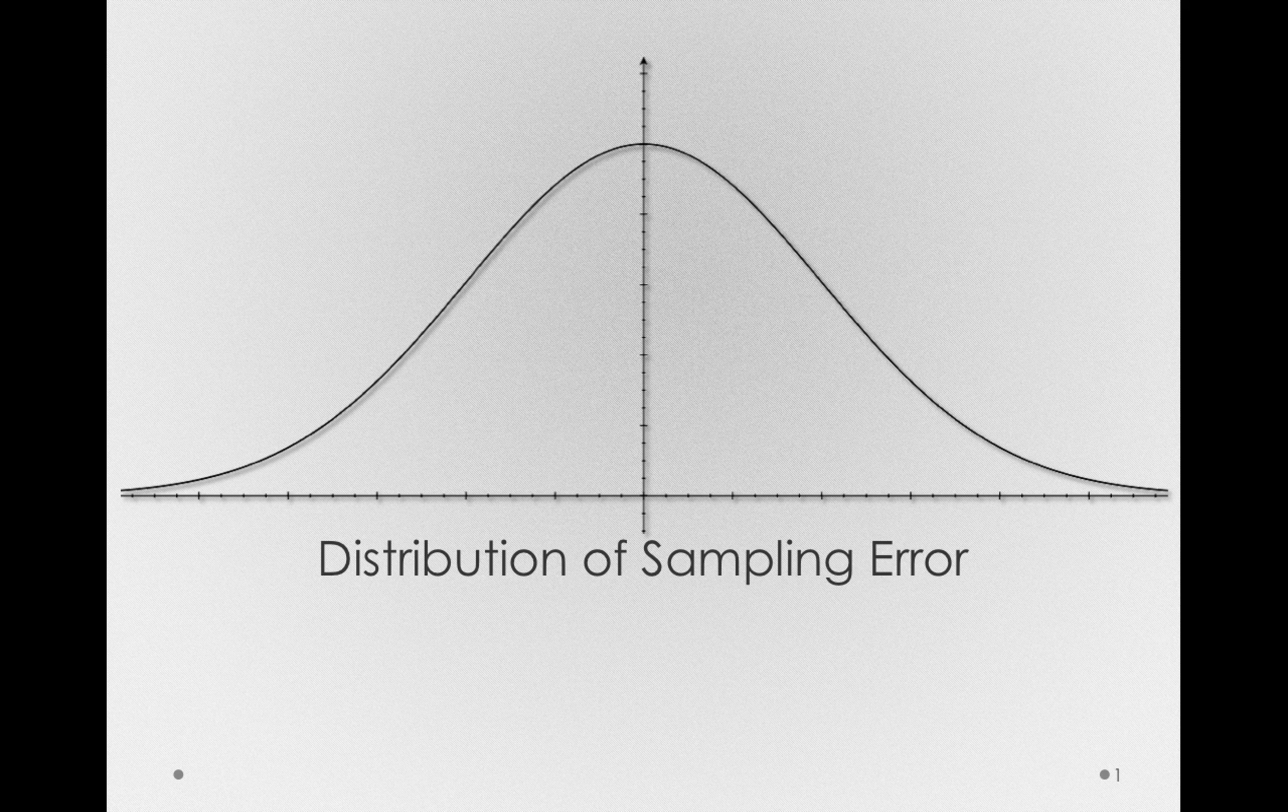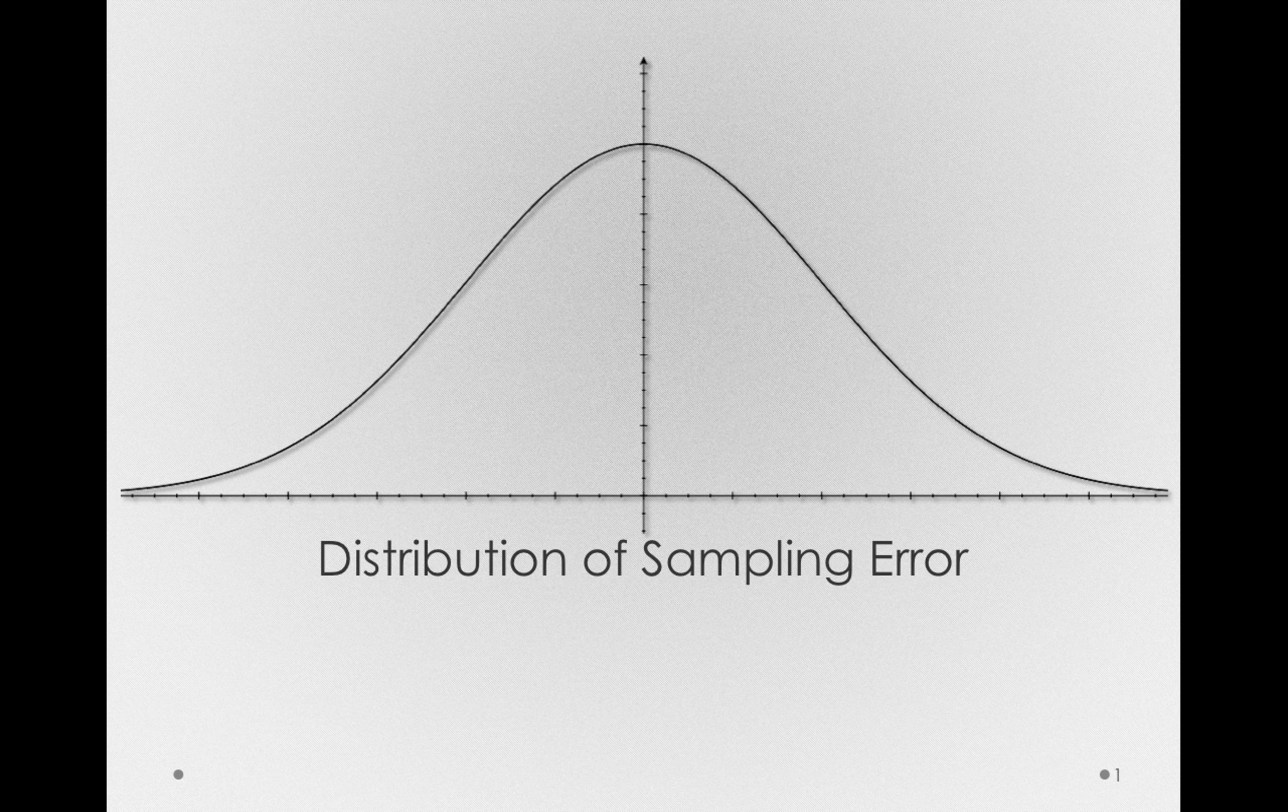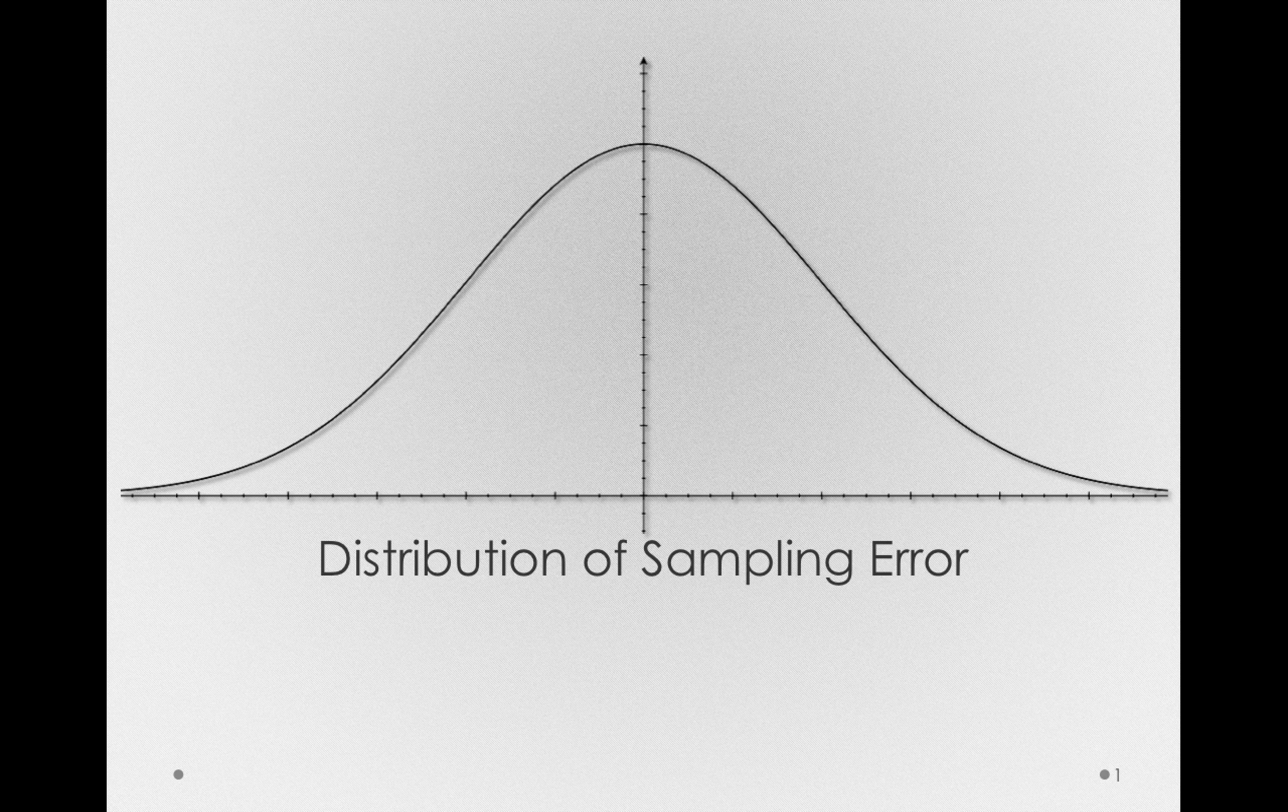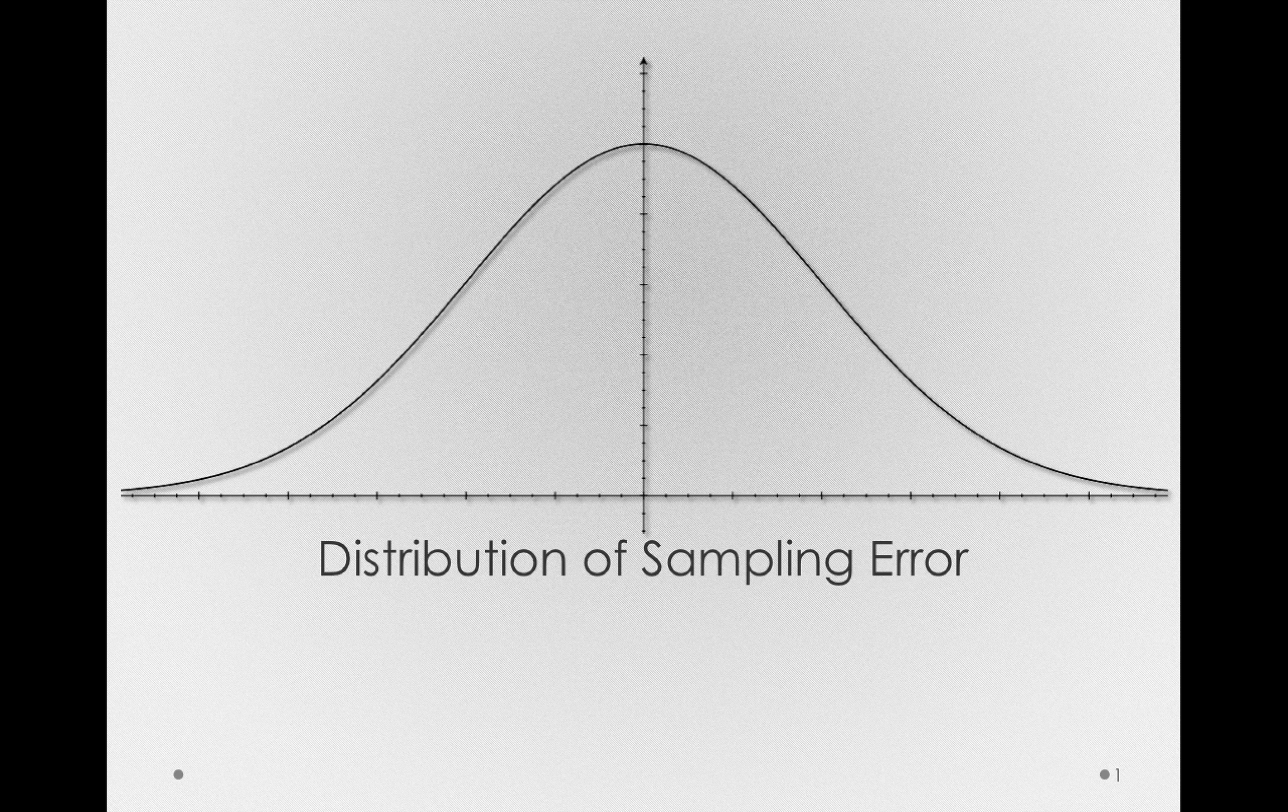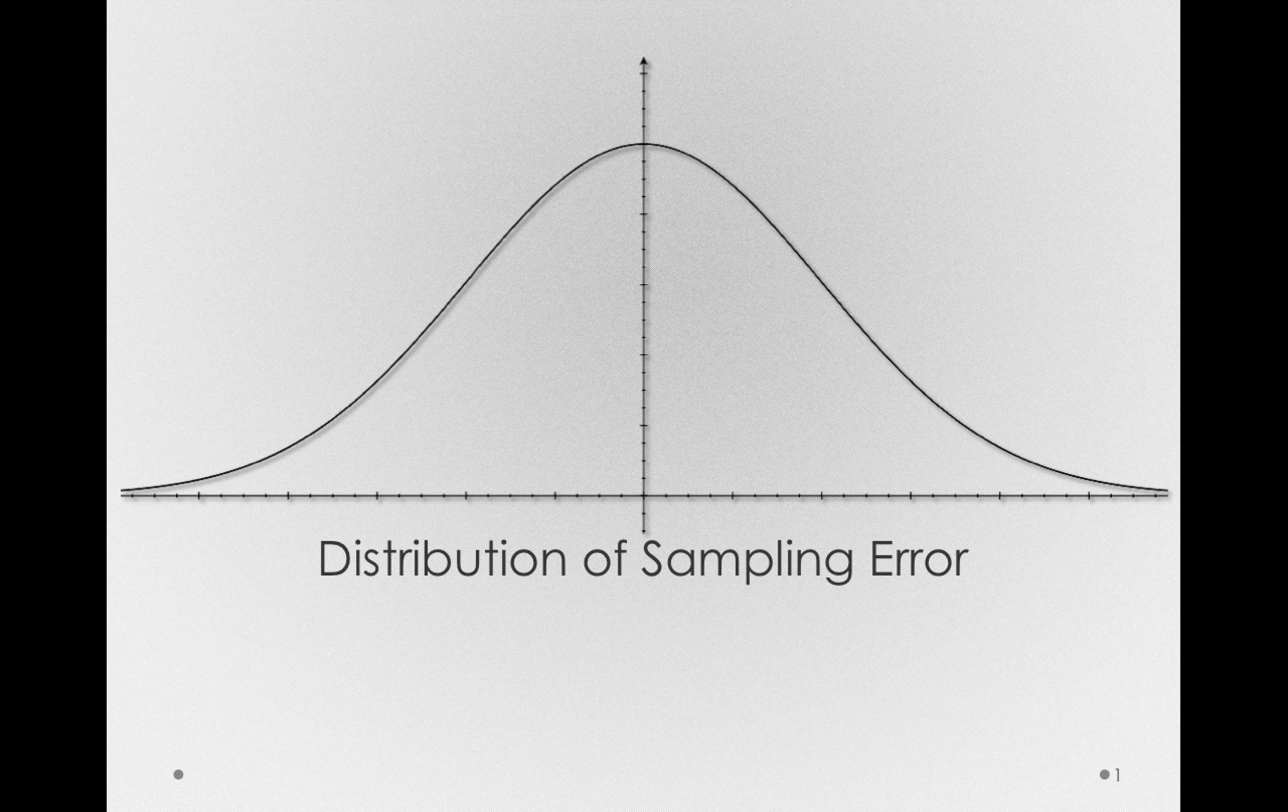But we can't simply make these general statements. How unlikely would a sample mean of 140 be if we were taking a sample from that population that had a mean of 100? We need specific statements about the likelihood of that outcome before we're going to be able to reject that first explanation in science.